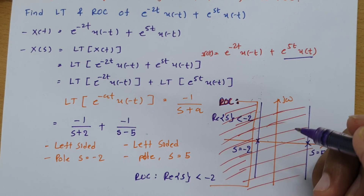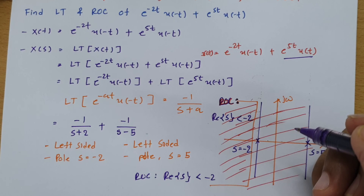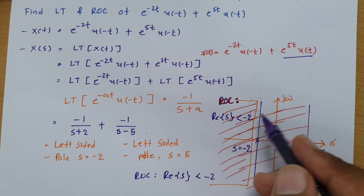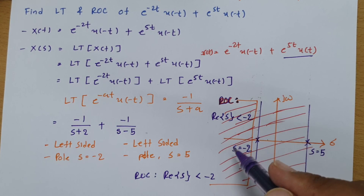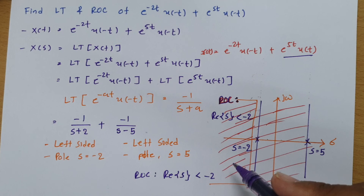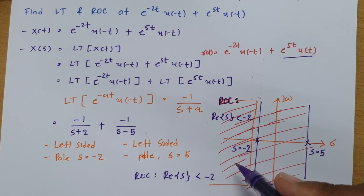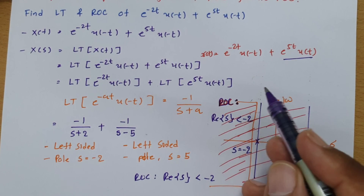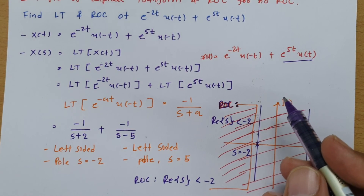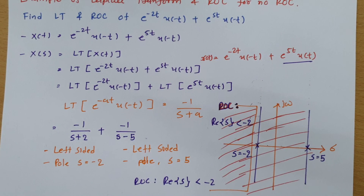So the key point is: when a common ROC exists, it becomes the ROC of the combined signal. But if there is no common region of overlap, then the ROC is empty and we say there is no ROC for that combined signal. That is all about this particular example.